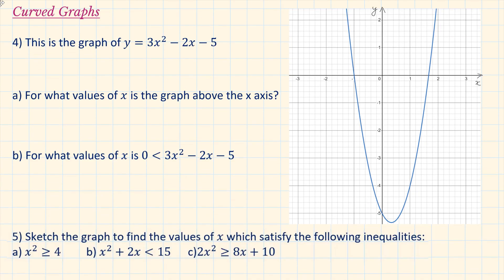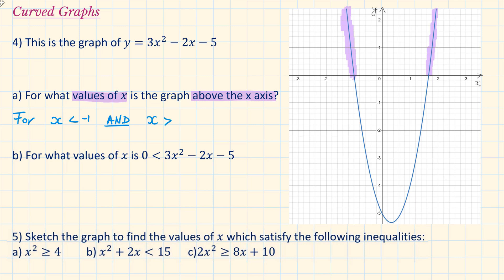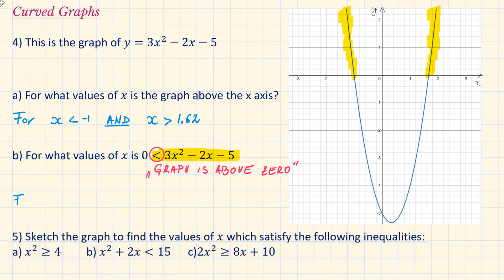Question 4: this is the graph of y equals 3x squared minus 2x minus 5. For what values of x is the graph above the x-axis? The part of the graph shaded in purple represents x less than minus 1 and x larger than approximately 1.62. Part B asks: for what values of x is 0 less than 3x squared minus 2x minus 5? This symbol shows the graph is larger than 0, meaning the graph is above 0, so we have the same answer as Part A.